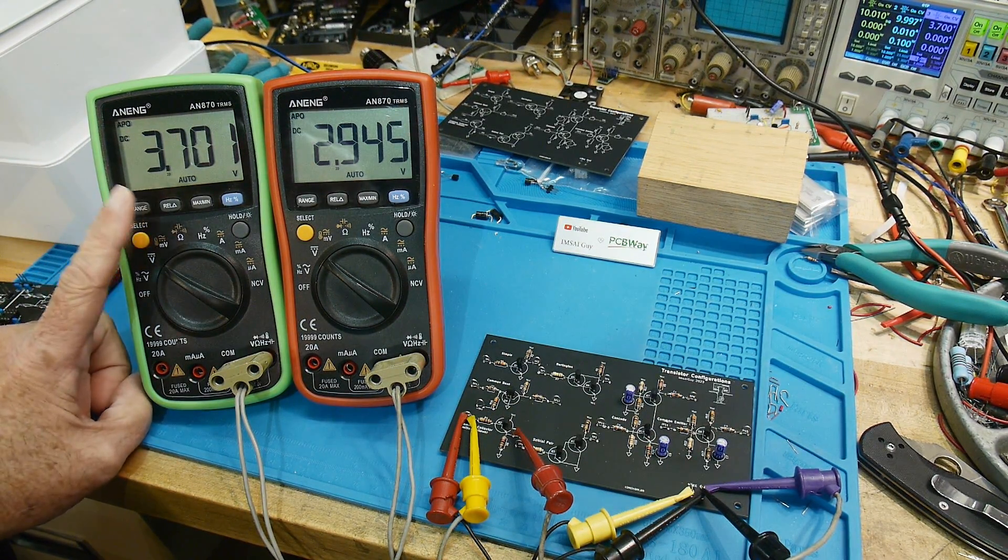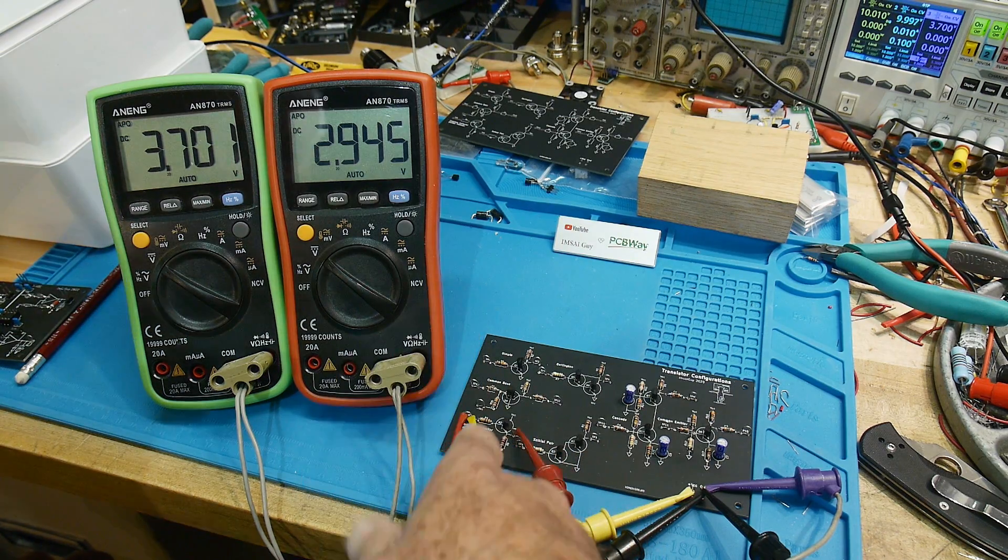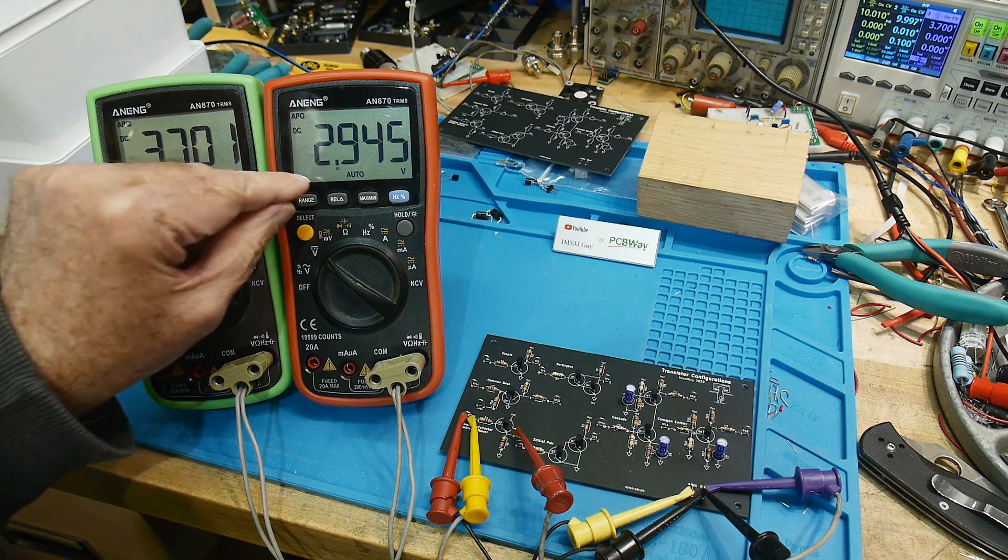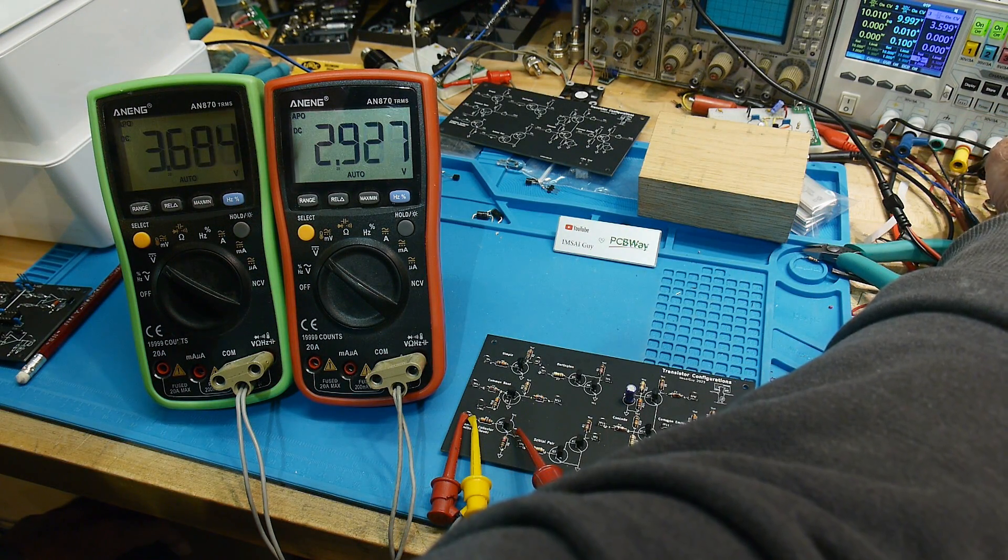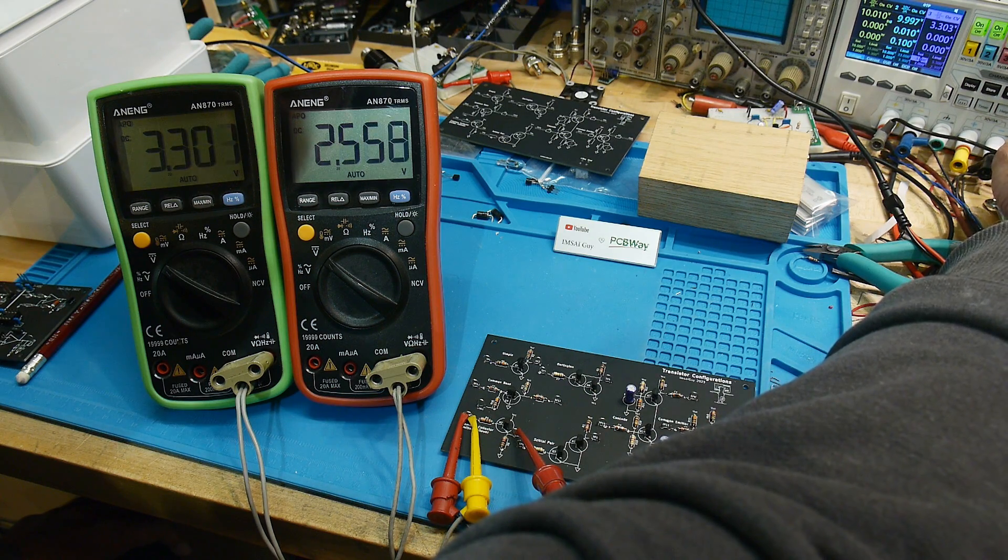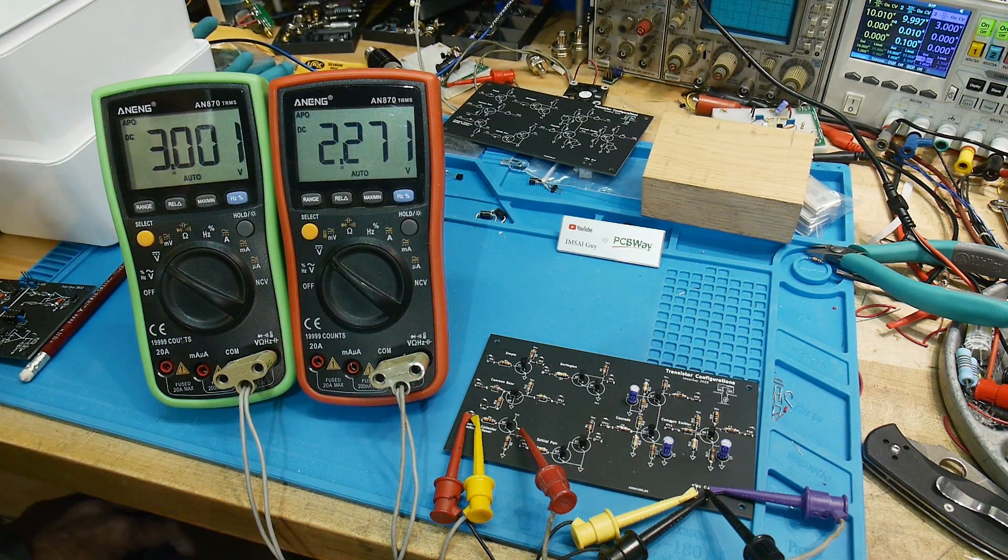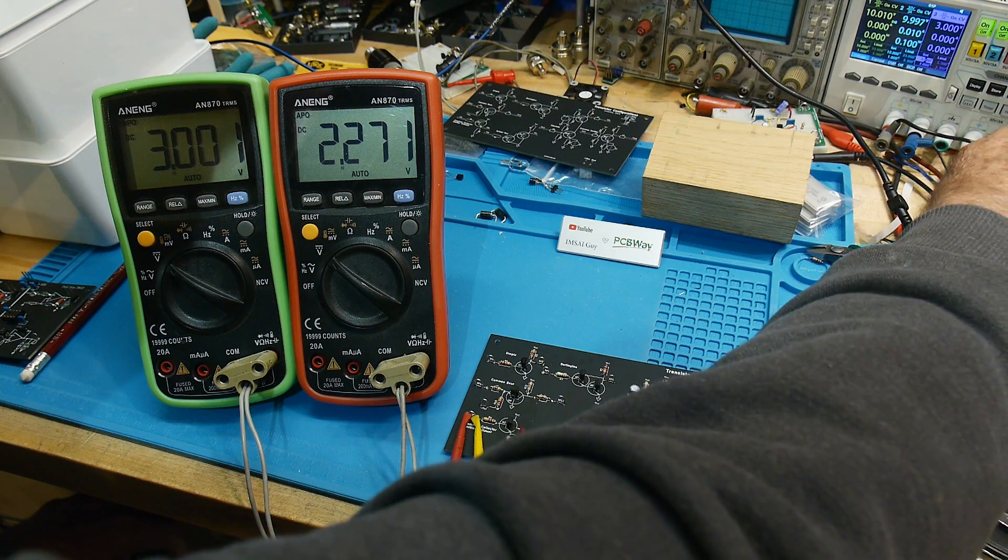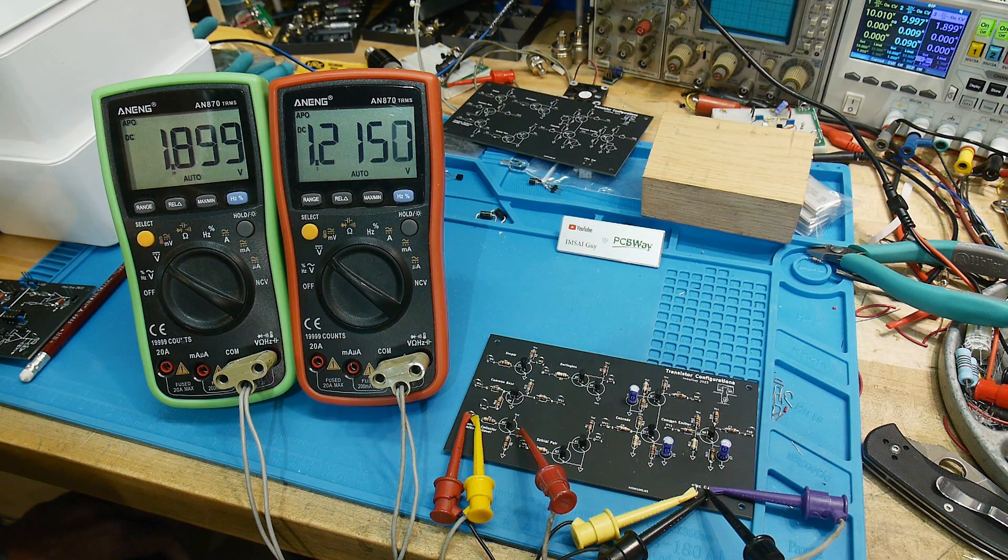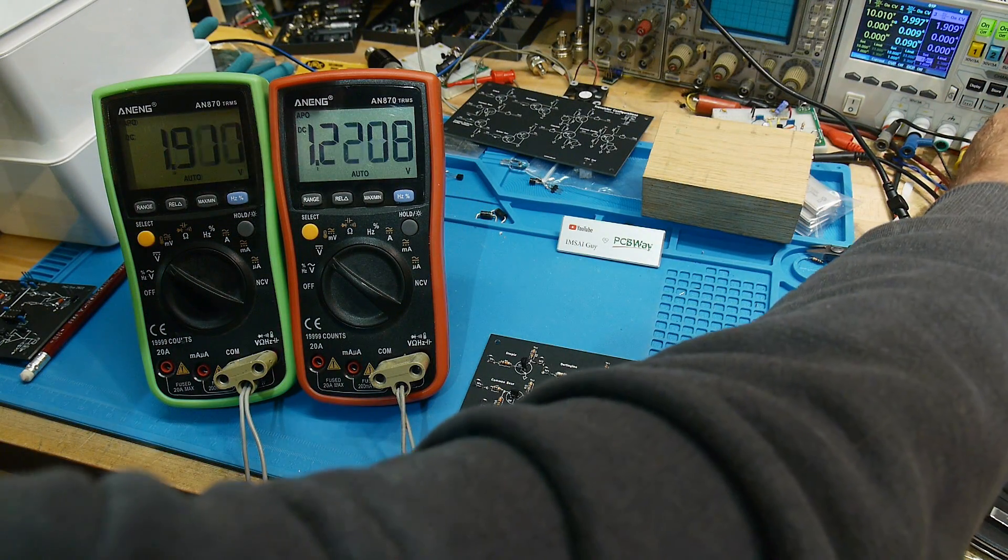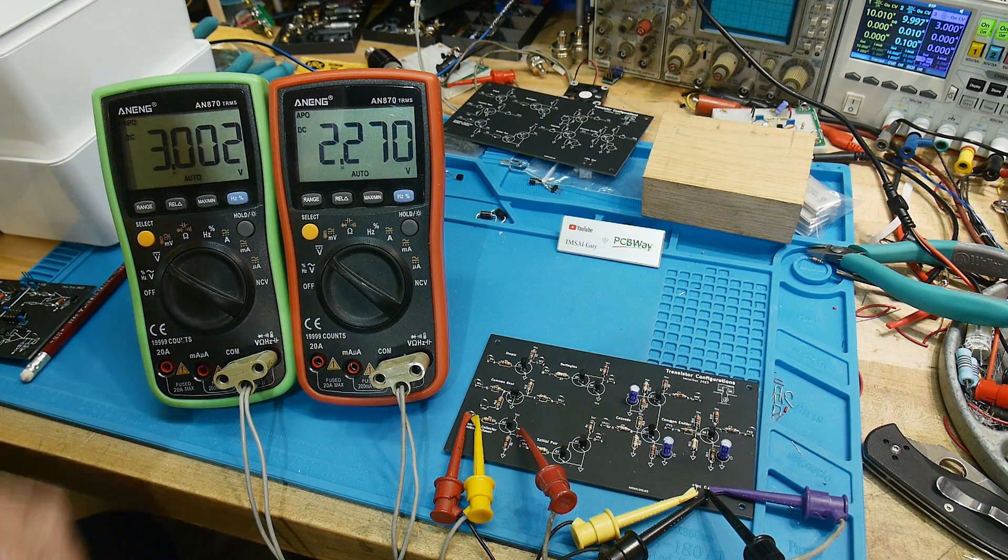All right, so we have about 3.7 volts on the input and about 3 volts on the output. Well, that's an emitter follower. Whatever you put on the input, you have about a VBE drop to the output. And I can reach around the camera here. I can change the input. So let's go down here. Let's put the input down to 3 volts. And then the output is going to be about 0.7 volts below that. So you can play with this. You can see how far down will it work? How far up will it work and stuff? You get the idea.